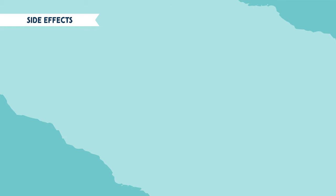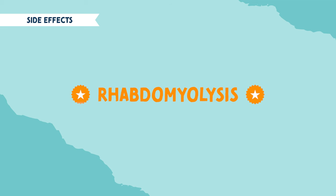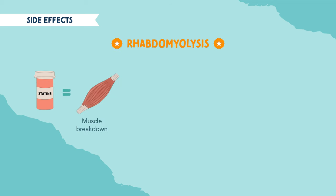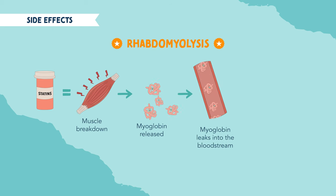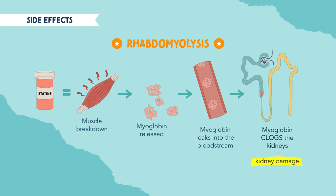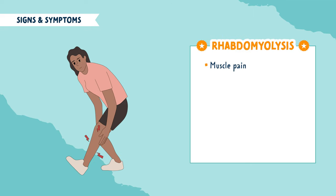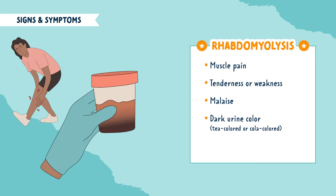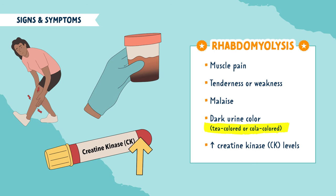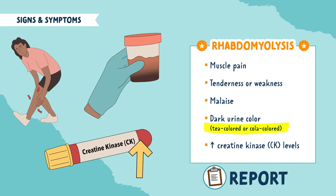Now let's look at some side effects of statins. The main side effect you need to know is that statins can cause rhabdomyolysis. When you take statins, the muscles start to break down, causing muscle fibers called myoglobin to be released and leak into the bloodstream. This myoglobin can clog the kidney's filtration system, causing kidney damage. Signs and symptoms include muscle pain, tenderness, weakness, malaise, dark urine — commonly described as tea-colored or cola-colored — and an increase in creatine kinase. These symptoms are not normal and should be reported to the HCP immediately to prevent kidney damage.